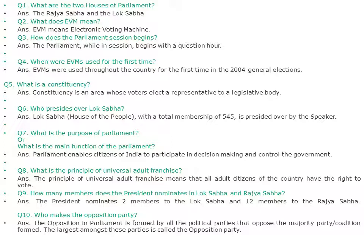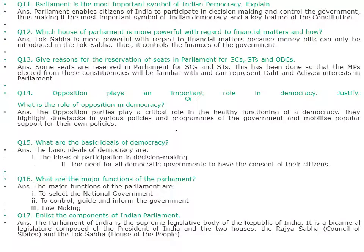How many members does the President nominate to Lok Sabha and Rajya Sabha? The President nominates two members to the Lok Sabha and 12 members to the Rajya Sabha. Who makes the opposition party? The opposition in parliament is formed by the political parties that oppose the majority party or coalition. The largest among these parties is called the opposition party. Parliament is the most important symbol of Indian democracy — explain.